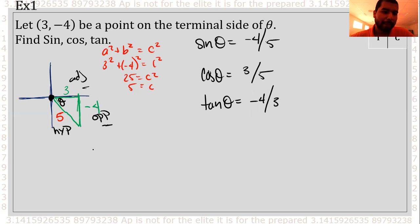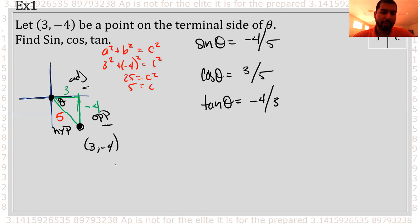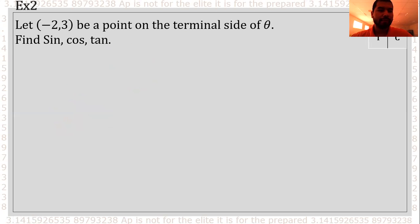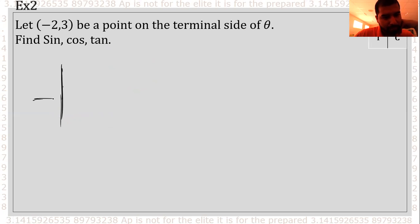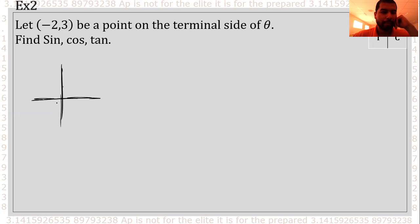Awesome. So hopefully that was not that bad. The main idea is that we had to plot the point (3, -4) — so 3 to the right and 4 down — but overall we were still able to find those trig functions. My last example for this will be how to do this one. I always want you to go ahead and plot this point just so you know where it is. So we have negative 2 and 3.